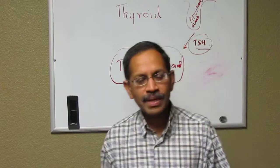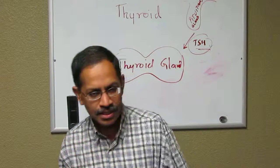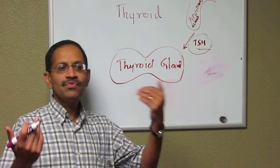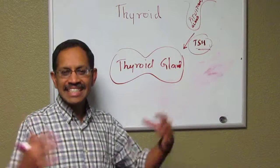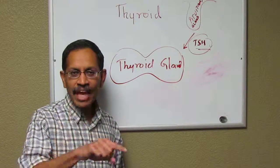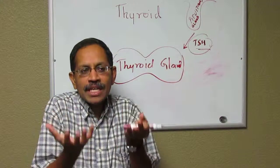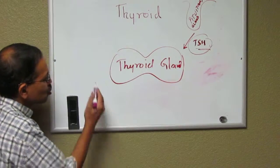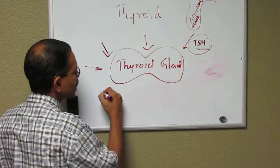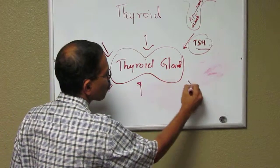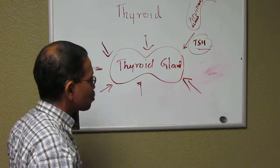The next topic is autoimmune thyroid disease. 'Auto' means from within yourself, 'immunity' refers to your own cells attacking, and 'thyroiditis' — anytime you have 'itis' at the end, it means inflammation. What is happening is your own cells from the body are attacking your thyroid gland for whatever reason — there is no clear explanation for it.